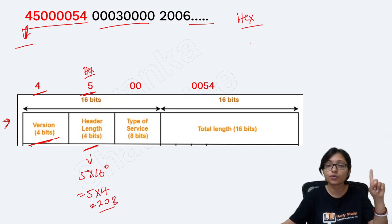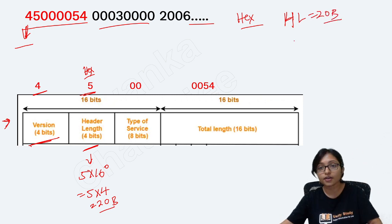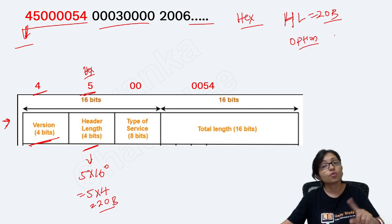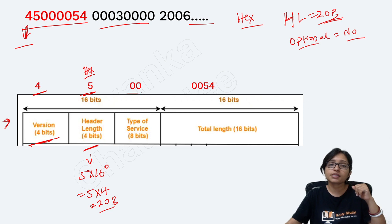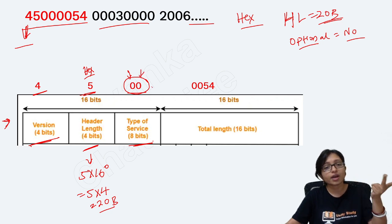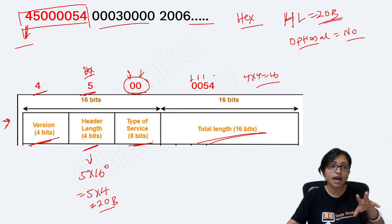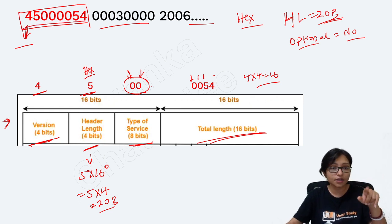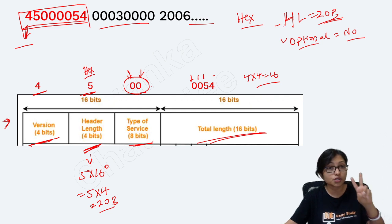So the Header Length is 20 bytes. That was the first question — what is the header length — and you got 20 bytes. From this you can also answer whether there is an optional part or not. The minimum header length is 20 bytes, and here the header length is 20 bytes, so there is no optional part. The Type of Service field comes next as 0x00 — that is 8 bits covering two hexadecimal digits.